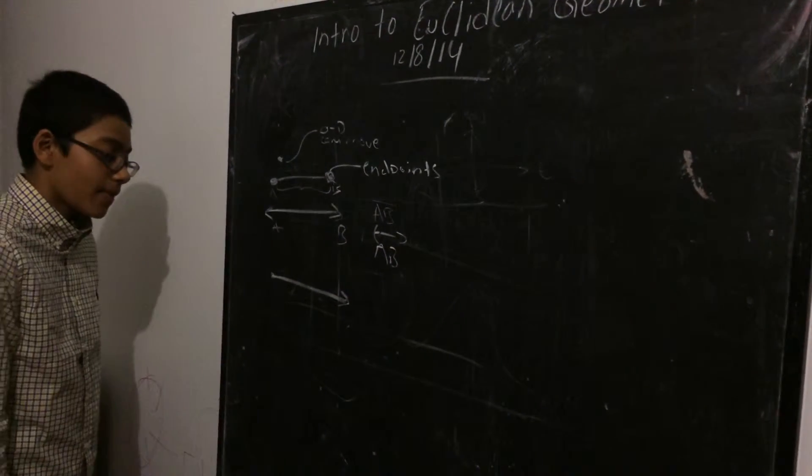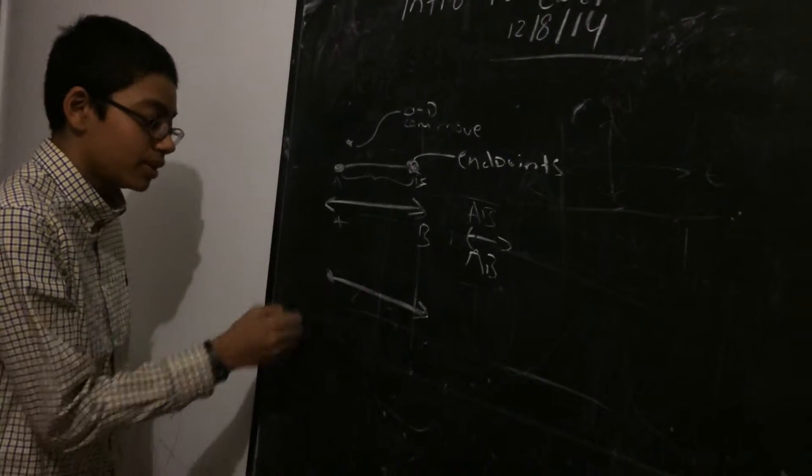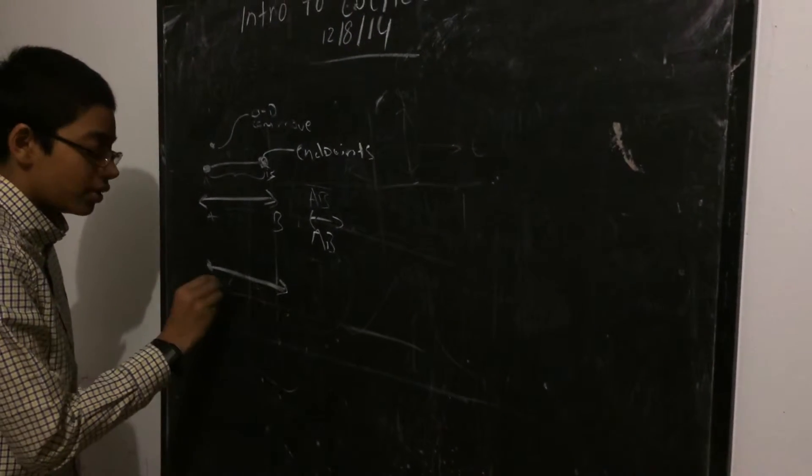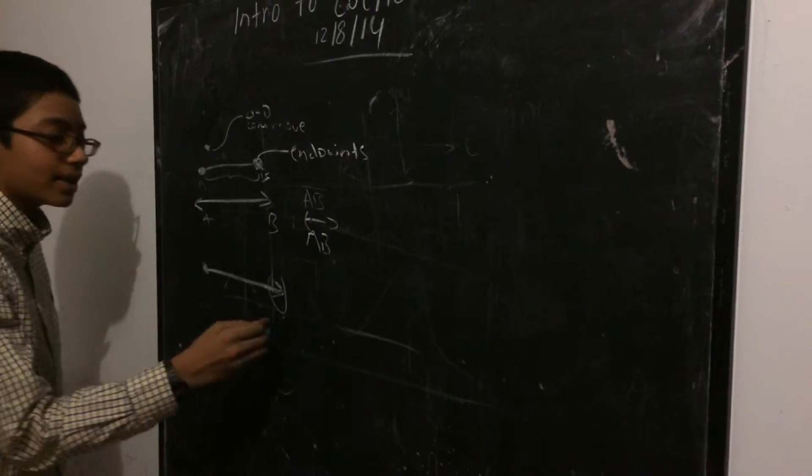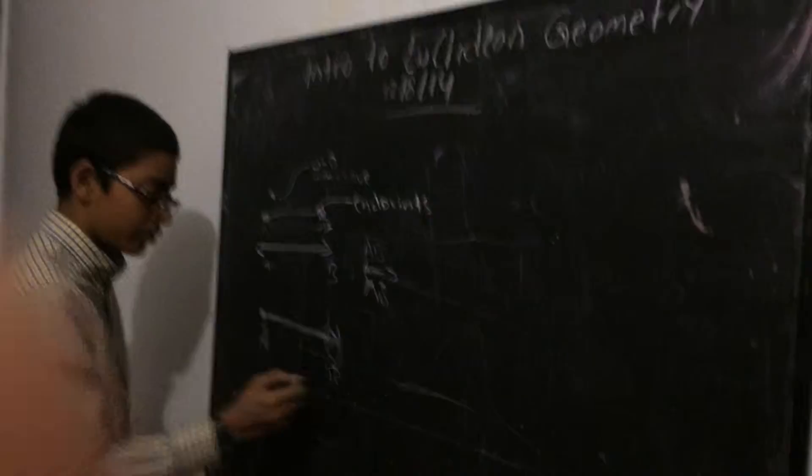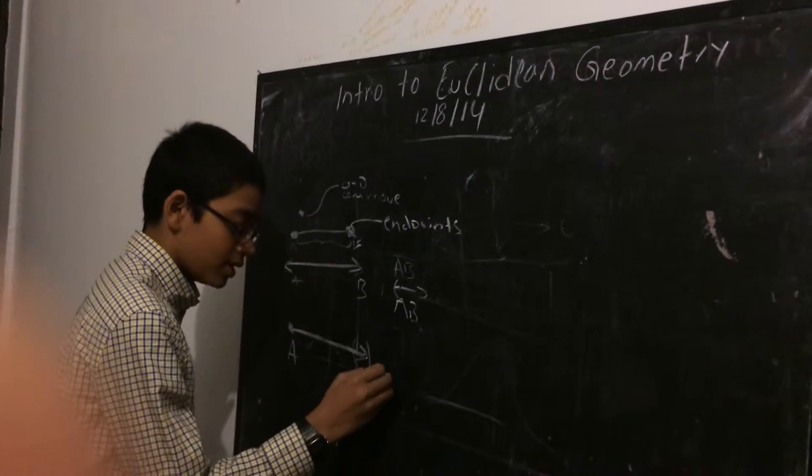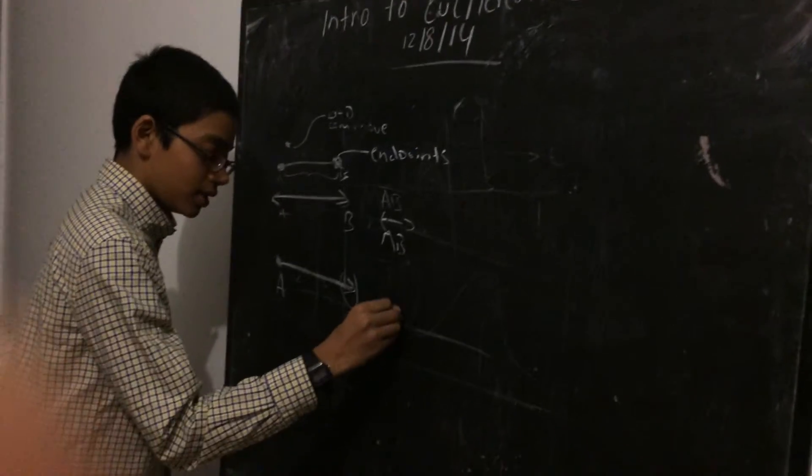And this is a ray, and a ray starts with an endpoint. So, it starts finite, and it goes forever in one direction, which the arrow indicates. And we can label the ray as endpoint A and B. So, this is ray AB.